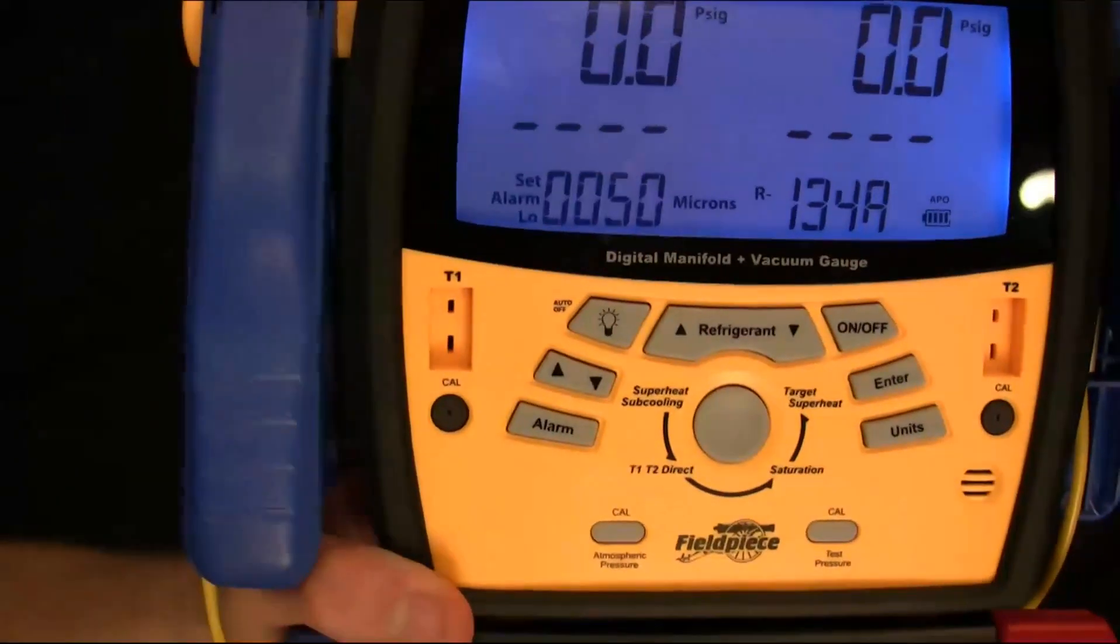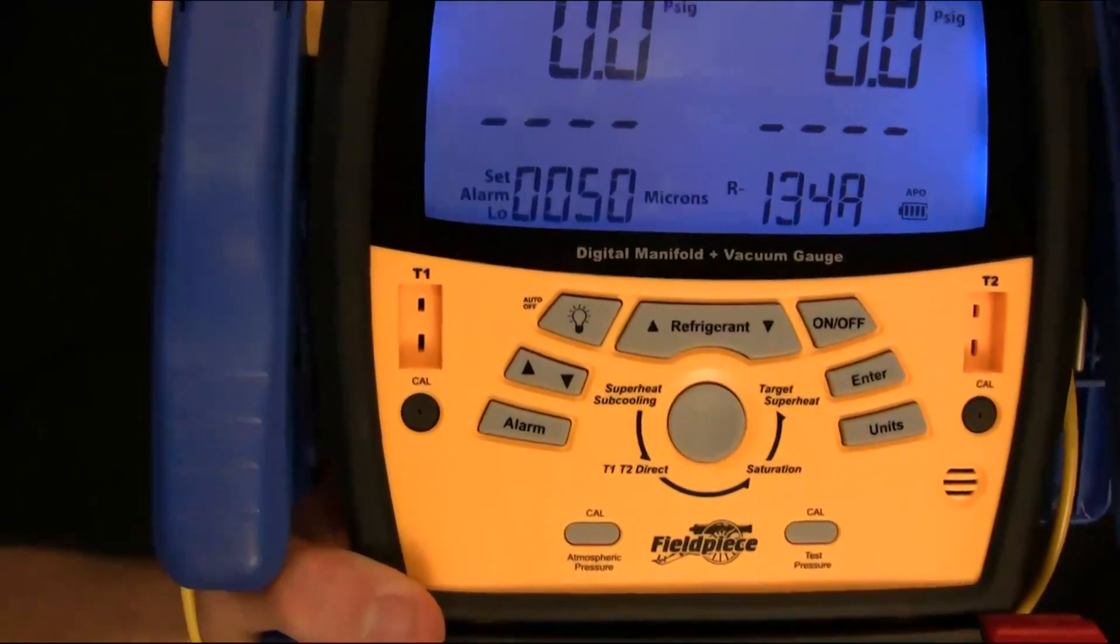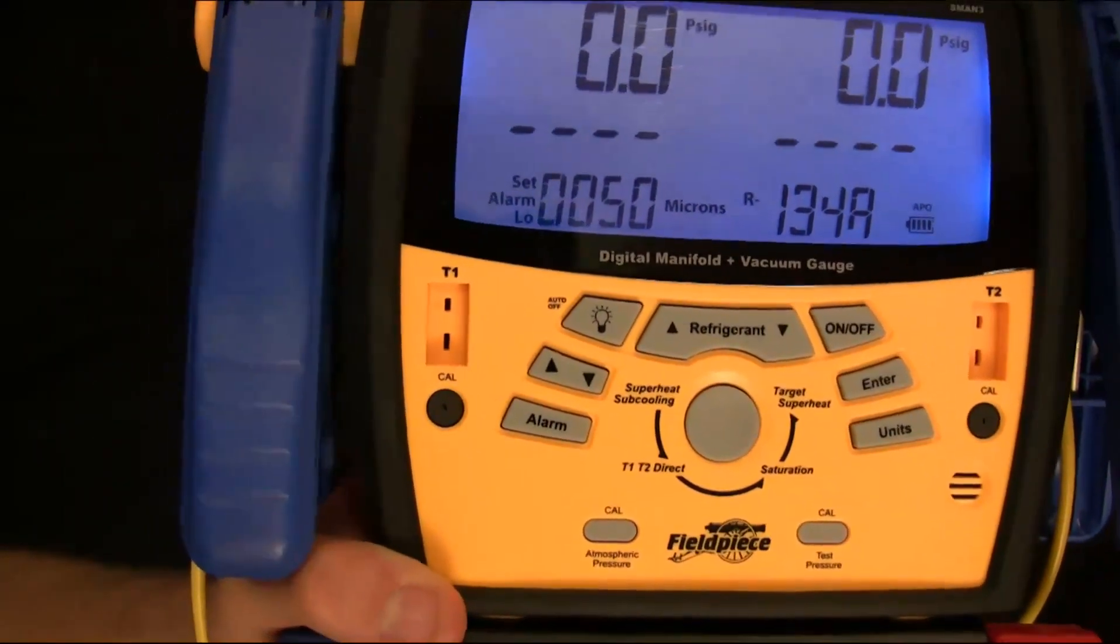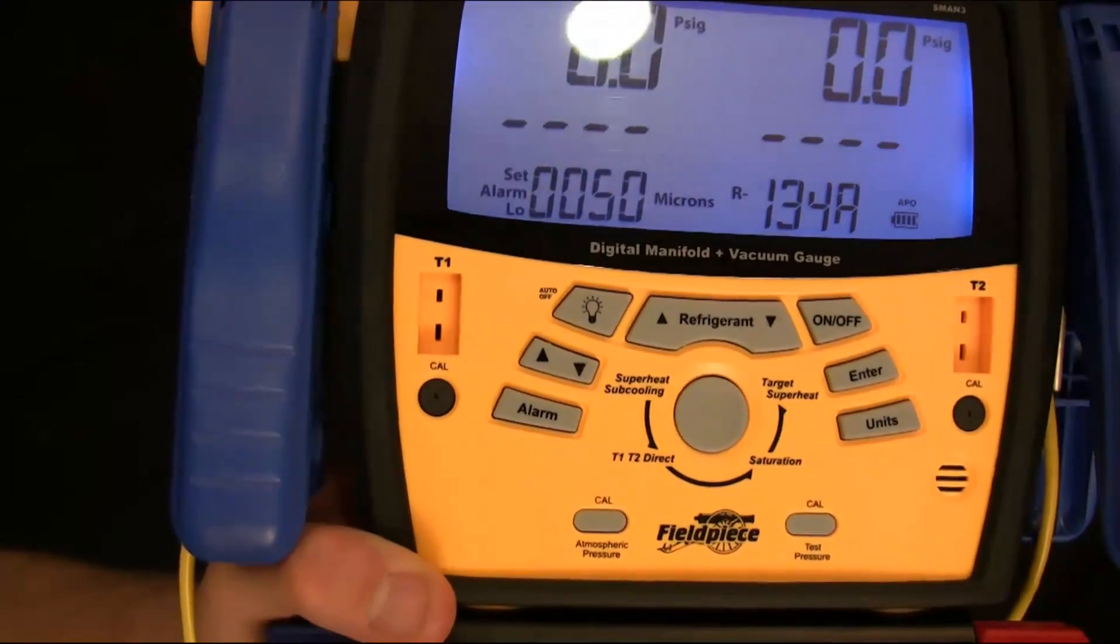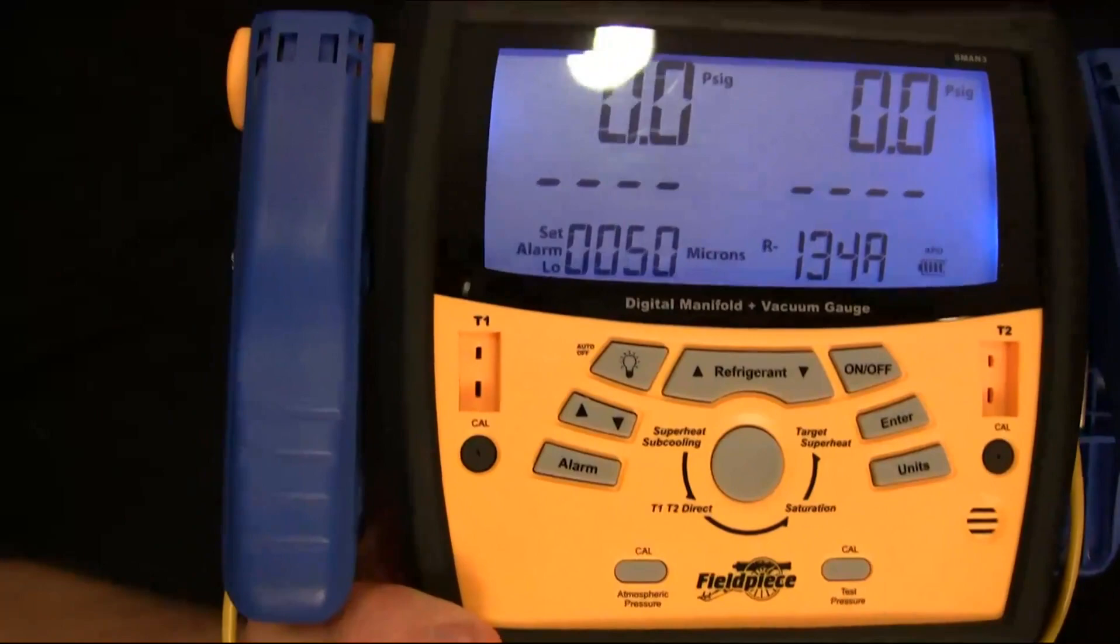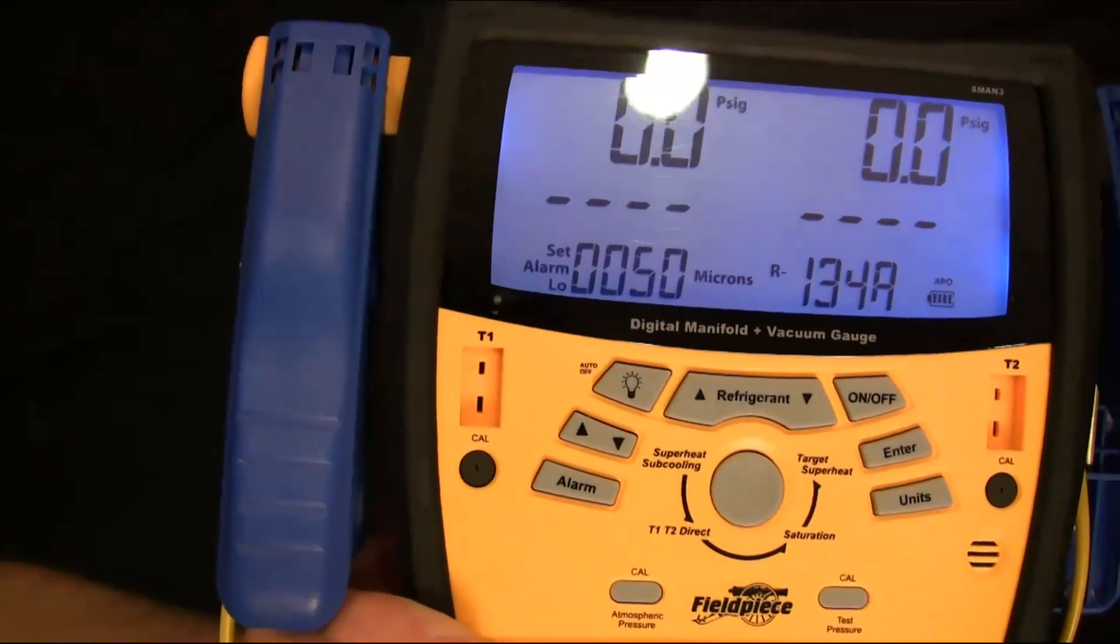What this does is as I start pulling a vacuum, I can set an alarm so that when it hits 50 microns, the alarm will go off. That way you don't have to babysit the system and you can be in your truck or whatever and the loud alarm will go off. And as long as you're close enough to hear the alarm, you'll know that your vacuum is done.